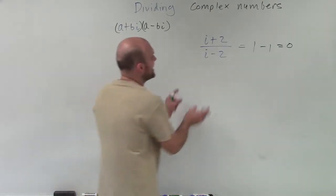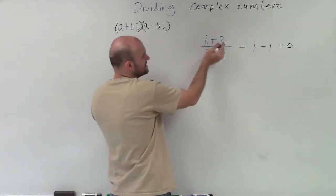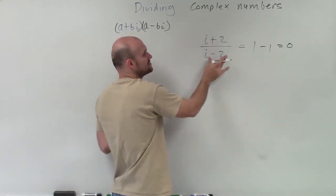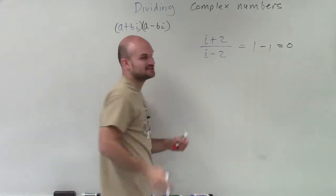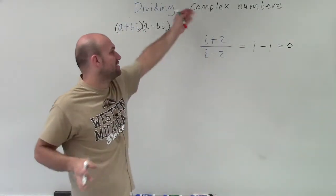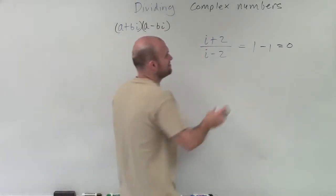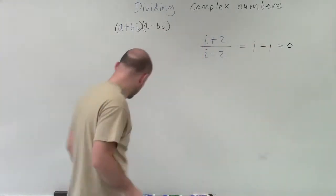But unfortunately, we cannot divide. These two terms are separated by subtraction, so we just cannot divide each term. This i minus 2 is divided into both of these terms. So we can't just take what numbers over each other, like addition or subtraction, and combine them. We can't do that with division.